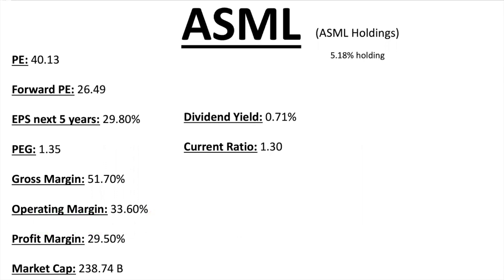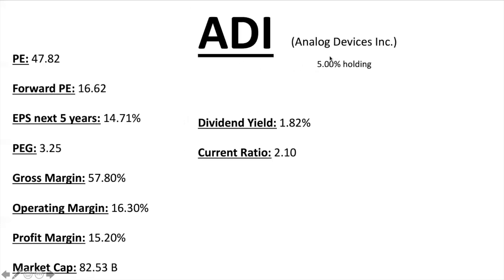ASML Holdings has a similar ratio to Broadcom with a 5.18% holding in the ETF. A little overvalued at PE ratio 40.13, Forward PE 26.49, EPS next five years 29.8% — giving it a lower PEG ratio of 1.35 (40.13 divided by 29.8). Great earning potential in the future. Profit margins over 20-25% — fantastic. Gross margins over 50% — fantastic. Market cap $238 billion, small dividend just under 1%, current ratio just over one.